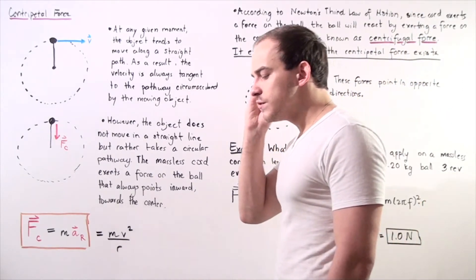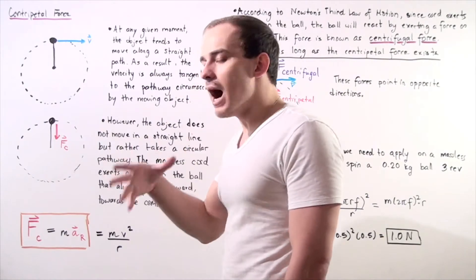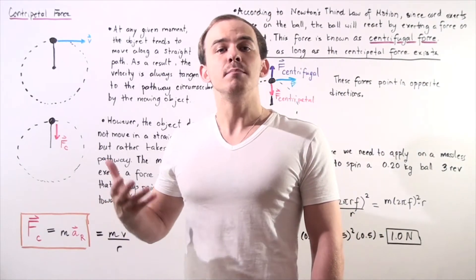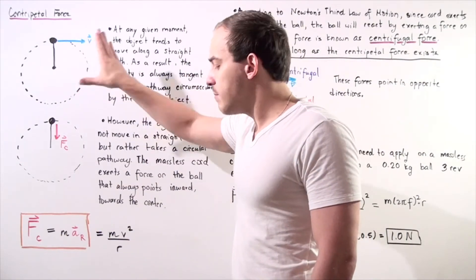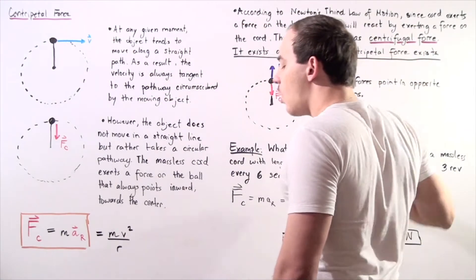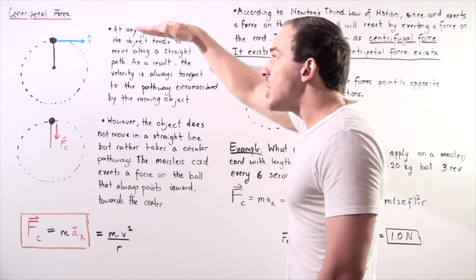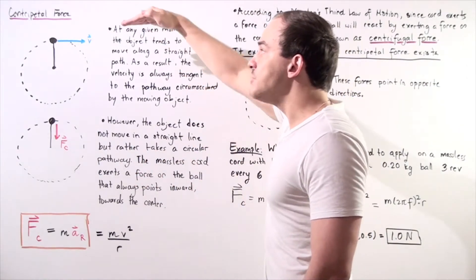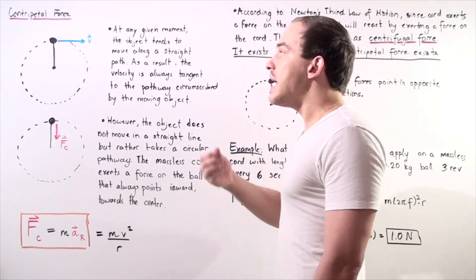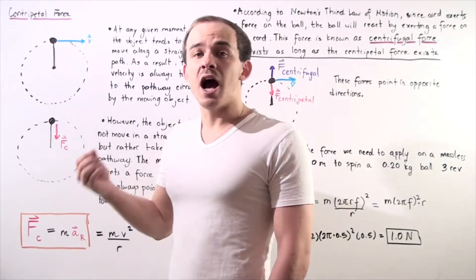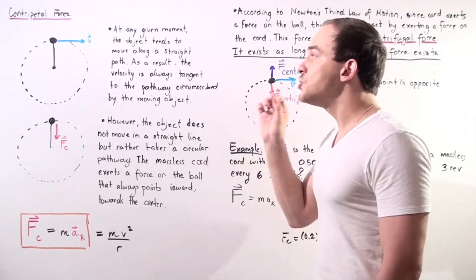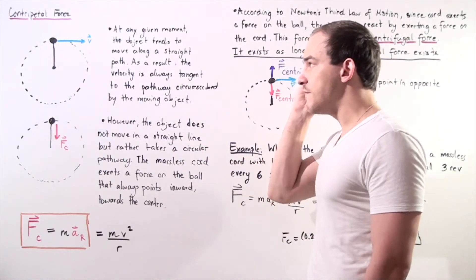Recall that according to Newton's first law of motion, an object should remain in its current state of motion unless acted upon by some net force. At this given moment, our object wants to move in a straight line, but it doesn't — it changes its velocity vector and changes direction. That means some net force must be acting on our object, accelerating the ball and changing the direction of the velocity vector.